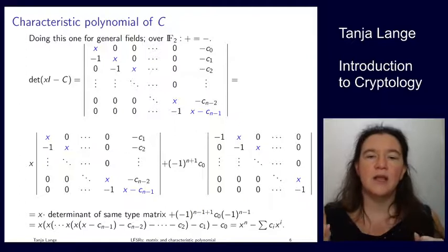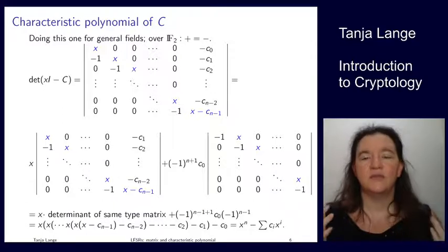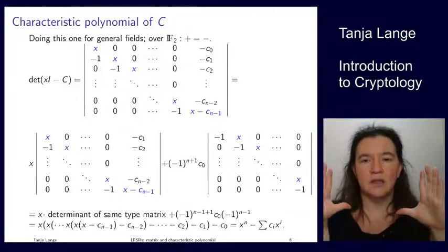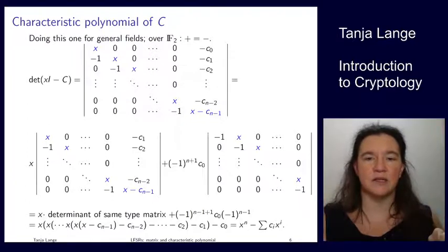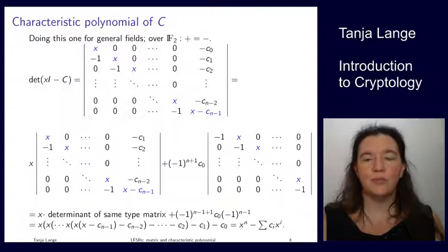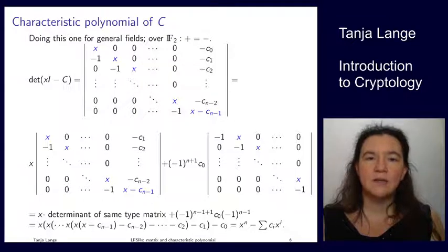This polynomial captures all the features of the feedback shift register as far as they can be captured by just the design rather than the starting state. It tells us something about what the period is and how we could combine LFSRs. More of that will be developed in the exercises on Thursday. That's the end of the lecture for today.